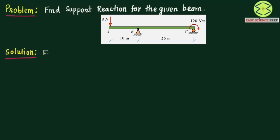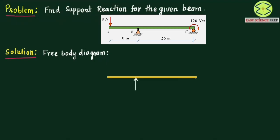In order to solve this problem, first we shall draw the free body diagram. In the free body diagram we shall draw the beam ABC and show all the forces acting on the beam without indicating the supports. We have a reaction force at hinge point B and a reaction at point C which is a roller support. At point B we have support reaction RB, at point C we have support reaction RC, and a moment of 120 Newton meter acting at point C.